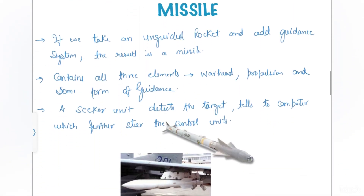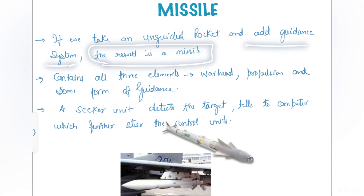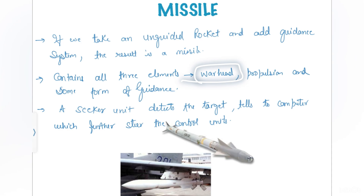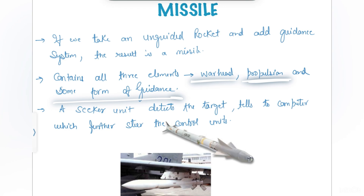Coming to the missile: if you take an unguided rocket and add a guidance system to it, the result is a missile. This is the smart bomb or smart warhead because it has all three differentiators — a warhead, a propulsion system, and some form of guidance.